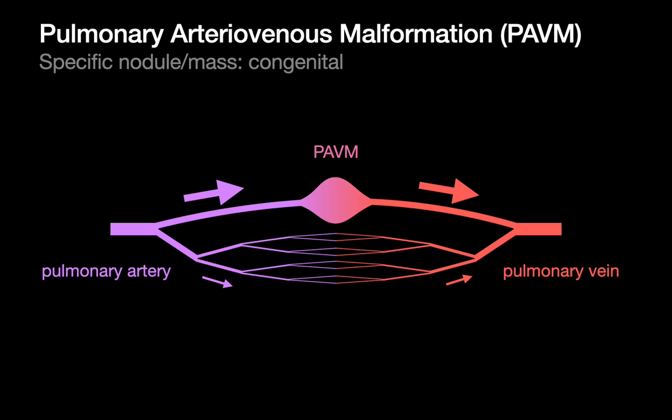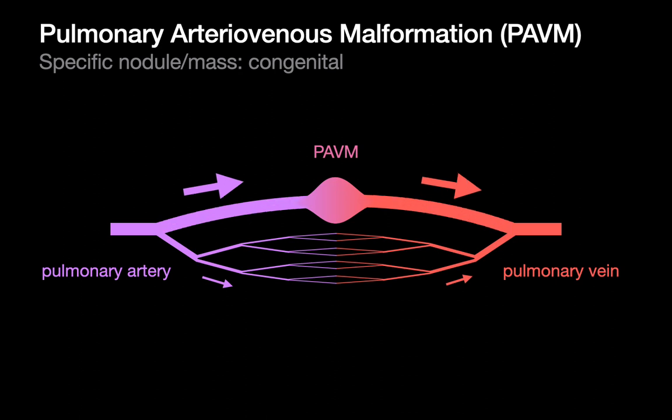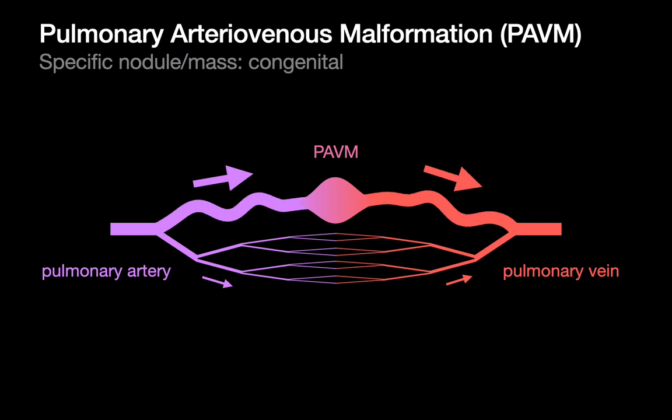It would be like if in Los Angeles traffic you suddenly opened a brand new highway between point A and B. Preferential blood flow would go through this lower resistance route, and the vessels, which were not really designed to handle such a high volume, may begin to stretch. If this phenomenon keeps progressing, flow will beget more flow, and the vessels coming and going may start stretching, becoming larger in diameter and taking a slightly more serpiginous route.